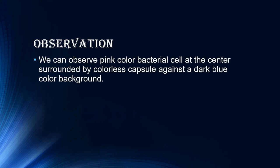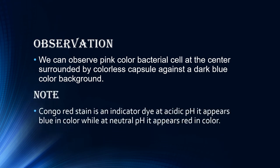Now let's see the observation. We can observe a pink color bacterial cell at the center, surrounded by a colorless capsule, against a dark blue color background. An important note: Congo red stain is an indicator dye. At acidic pH it appears blue in color, while at neutral pH it appears red in color. Initially, Congo red solution stains the background red, but due to acetic acid, the pH changes from neutral to acidic, causing the background color to change from red to blue.